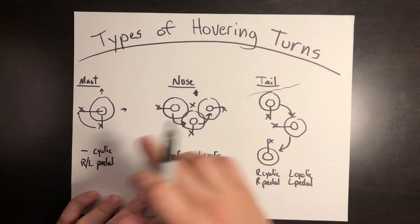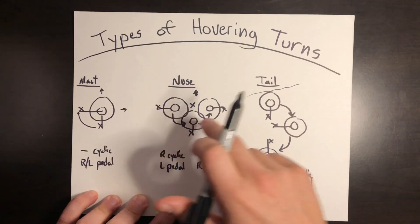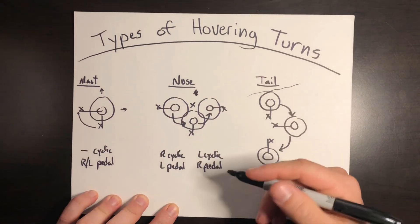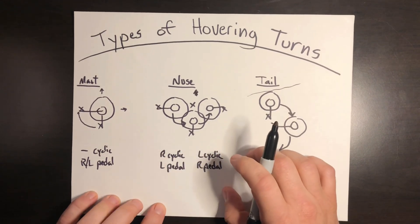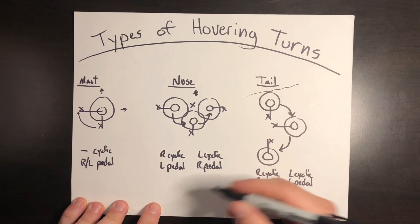So once again, three types of turns with the pivot points being the mast, the nose, and the tail. Lastly, I'm going to cover some tips on what to look for when you're doing pedal turns.